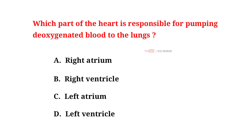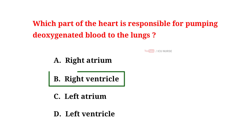Which part of the heart is responsible for pumping deoxygenated blood to the lungs? A. Right atrium. B. Right ventricle. C. Left atrium. D. Left ventricle. And the correct answer is B. Right ventricle.